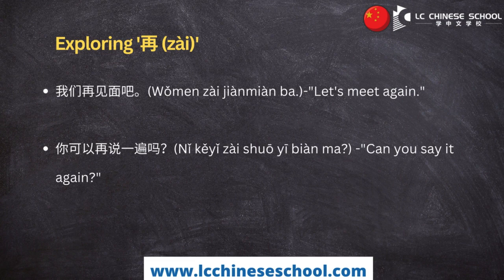For example, 再 is used to express 'one more time.' 'Let's meet again' uses 再 for a future meeting. 你可以再说一遍吗 means 'Can you say it again?' Here, 再 indicates a future or anticipated repetition of an action.